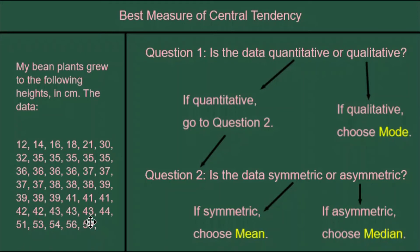This data is roughly symmetrical. So therefore, I'm going to choose mean. My reason? Because the data is quantitative and symmetrical.